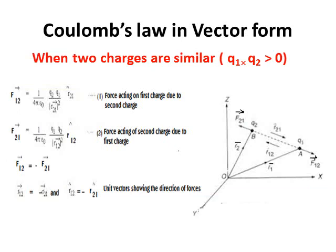In the last lecture, we discussed Coulomb's law. Now let's discuss its vector form. Firstly, we will discuss when the two charges are similar. Consider two point charges q1 and q2 placed in vacuum at distance r from each other.